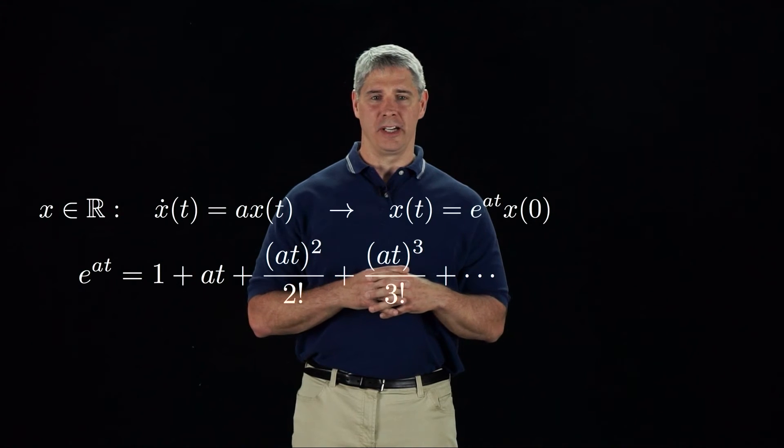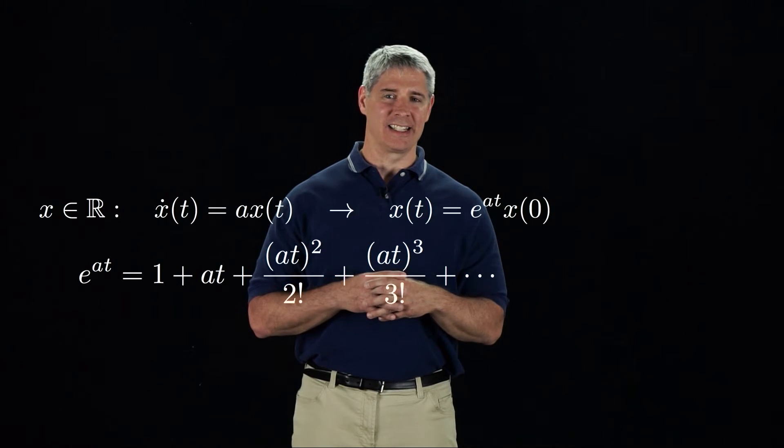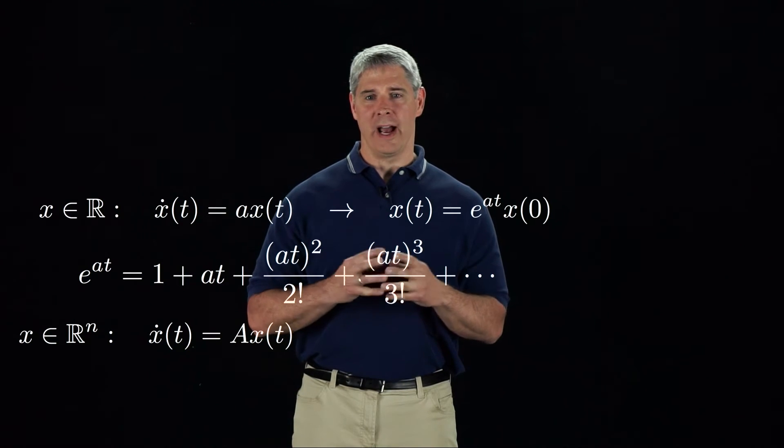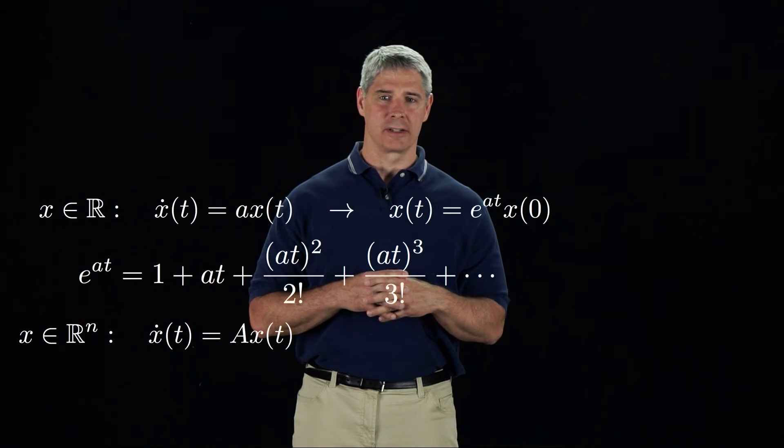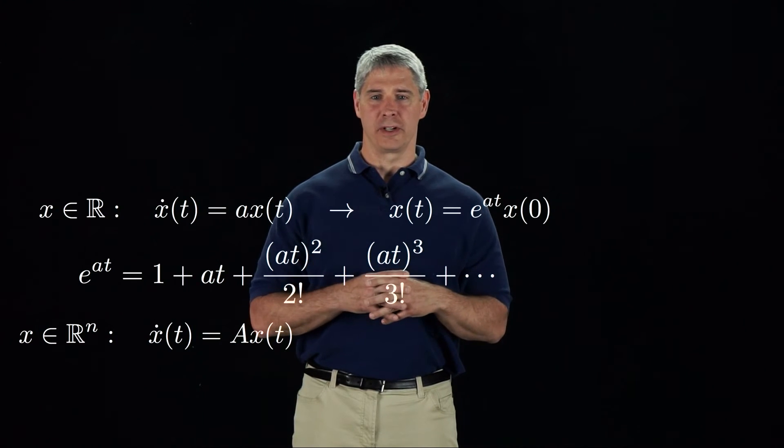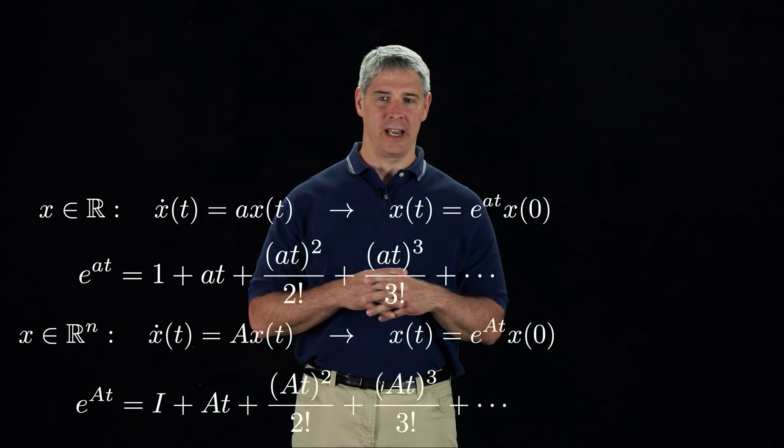This scalar linear differential equation has an analogous vector linear differential equation, where x is now an n vector and a is a constant n by n matrix. The solution to this differential equation has the same form as the single variable case.